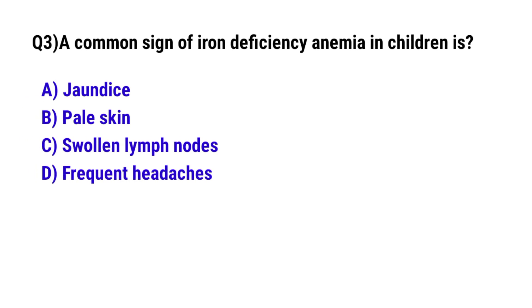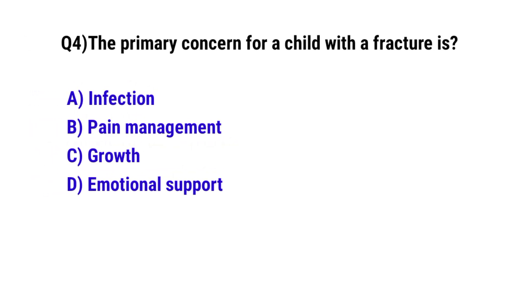Question 3: A common sign of iron deficiency anemia in children is — the correct option is B: Pale skin. Question 4: The primary concern for a child with a fracture is — the correct option is B: Pain management.